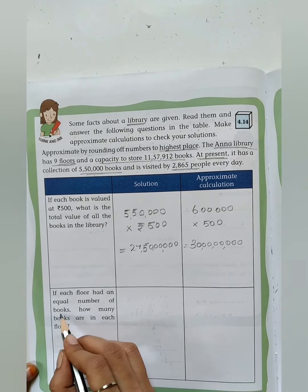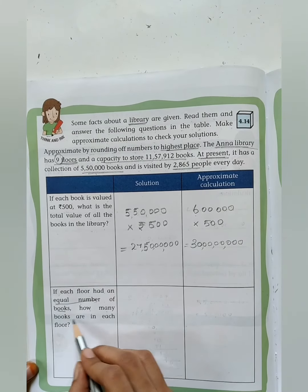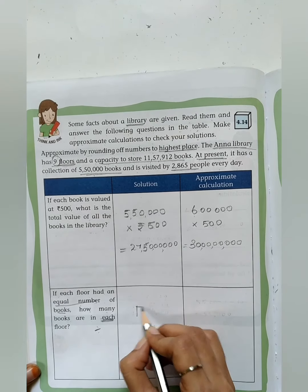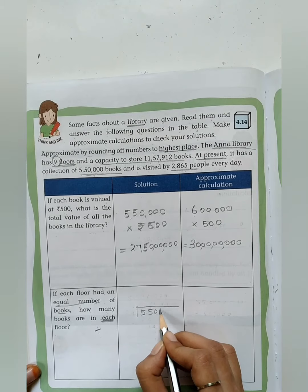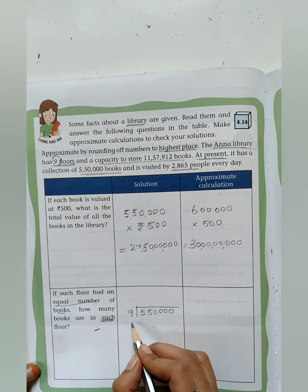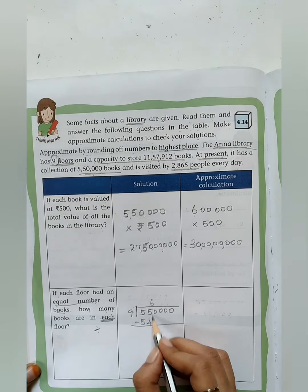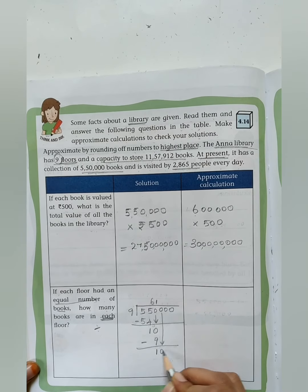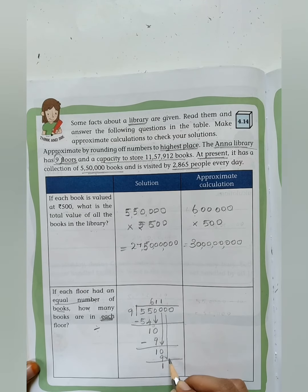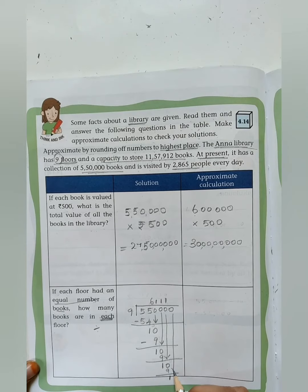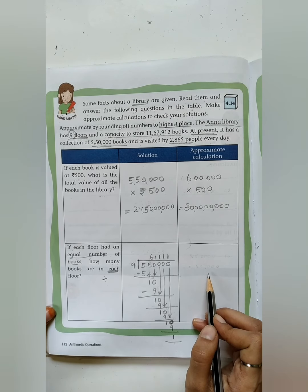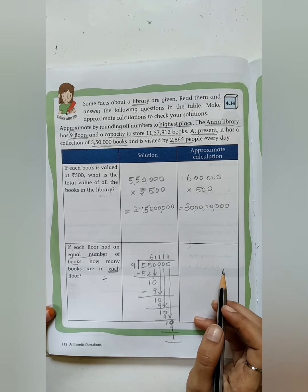Next, if each floor had an equal number of books. Here nine floors are there and we are going to split the books into nine floors. Splitting in each floor means we have to do division. The present book is 5,50,000 divided by 9. After dividing, you will be getting the answer like this. Next part is for you. After rounding off 5,50,000, you will get 6 lakh. Then by rounding off 9, you will get 10. You have to do the division in this box.